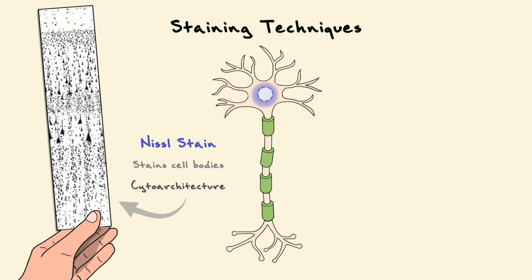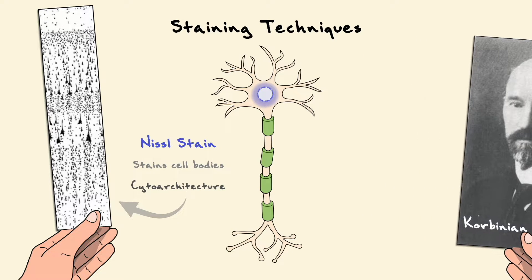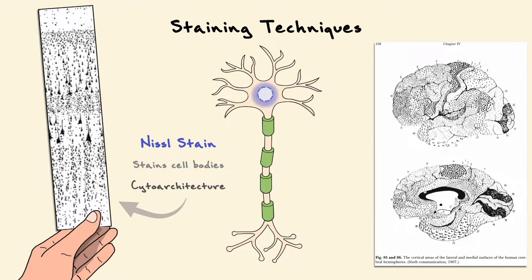This method was used by a neuropsychiatrist named Corbinian Brodmann, who stained different areas of the cortex to categorize them based on the properties of the cell bodies. As a result, the scientist came up with a map called the Brodmann map.